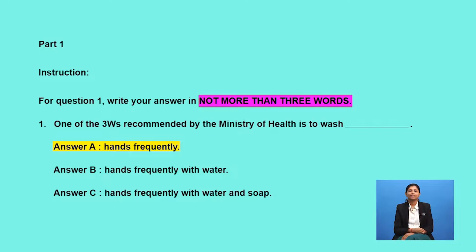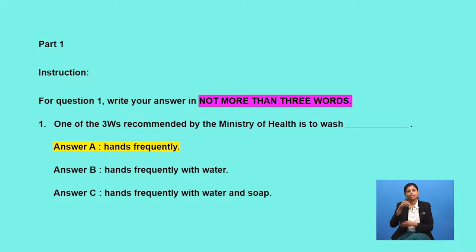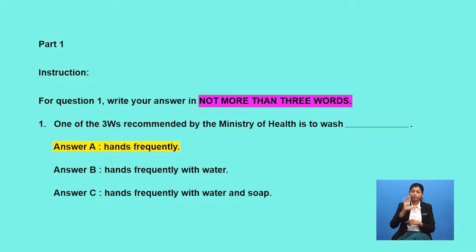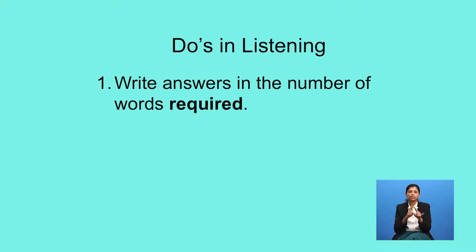All the answers A, B, and C are correct — in fact, they are all perfect answers. But which is the most accurate one? The most accurate answer is A. What is wrong with B and C? The instructions require candidates to write answers in not more than three words. Since answers B and C exceed three words, they are not accepted as they do not adhere to the instructions. Therefore, the first do in listening is to write your answers in the number of words required.